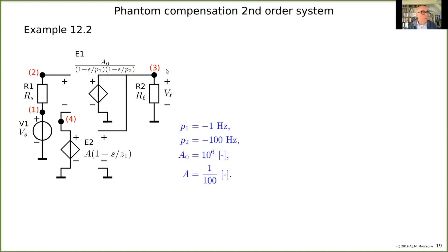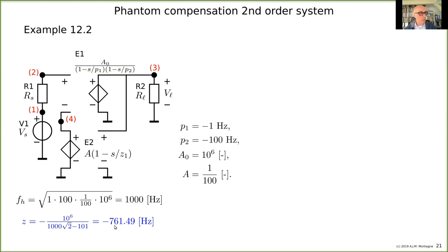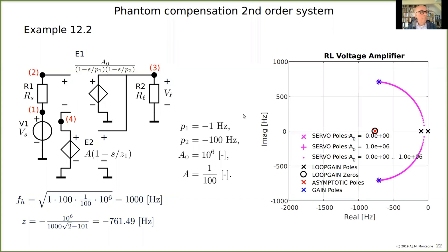Let's put in some numbers. P1 is at 1 Hz, P2 at 100 Hz, DC gain of one million, and attenuation of 100, giving a voltage gain from source to load of 100. Ignoring the zero first, the bandwidth is the square root of the product of the loop gain and the poles: 1 Hz times 100 Hz times 10^6 times 1/100, which gives 1000 Hz. Using the previous formula, the required phantom zero is at approximately 761.49 Hz.